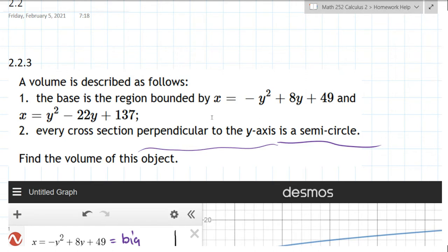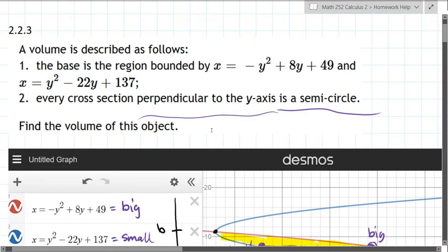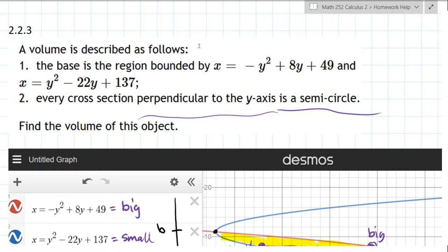So what I did, I went to Desmos and graphed it. However, we're still going to intersect them using algebra, but I did want to see what they look like. Now these are two quadratics, two parabolas.